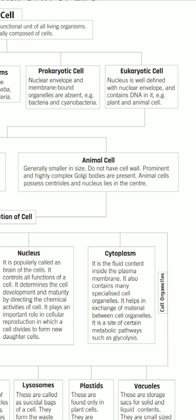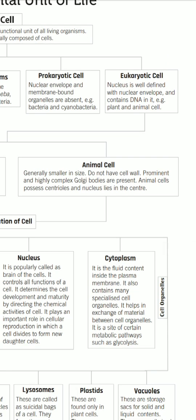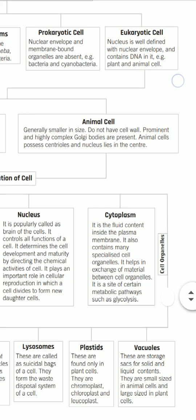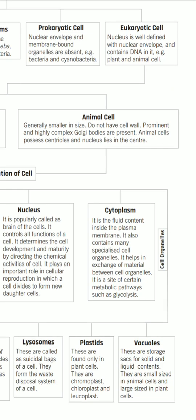Moving to eukaryotic cells: the nucleus is well defined. In prokaryotic cells, the nucleus is not well defined, but that does not mean they do not have genetic material. Bacteria and unicellular organisms do have chromosomes and chromatin, but they are not in a perfect shape as there is no nuclear envelope. In eukaryotic cells, all genetic material is contained within a nuclear envelope, so the nucleus is well defined and contains DNA. Examples are plant and animal cells.